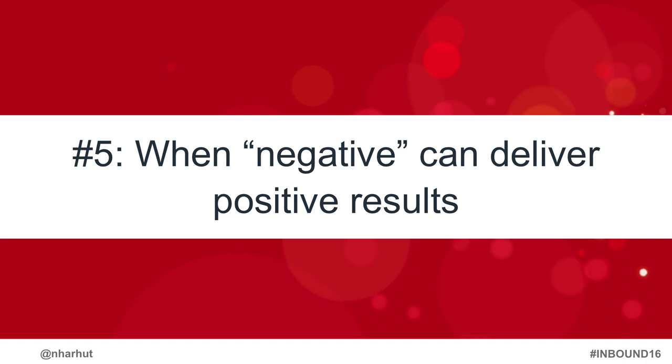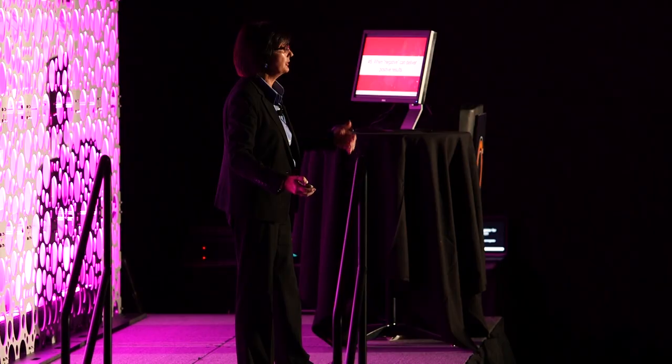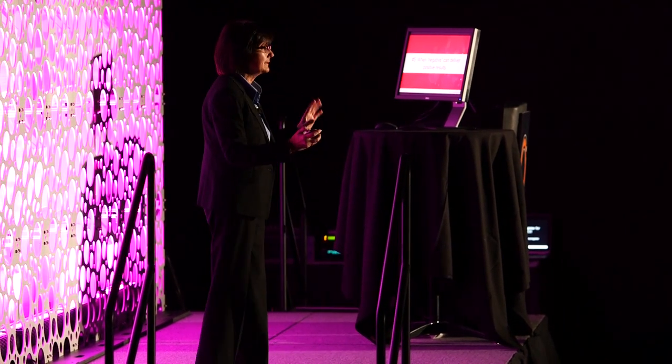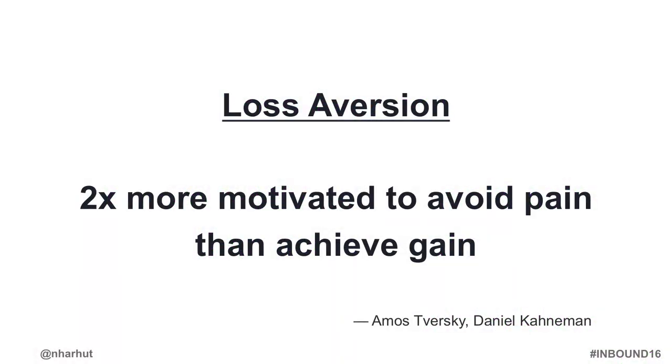Our fifth human behavior hack: when negative can deliver positive results. In marketing it's all about the benefits — we tell people all the wonderful things that will happen if they buy our product, sign up for our service, or download our white paper. That's fine, except social scientists have found that people are twice as motivated to avoid pain as they are to achieve pleasure — twice as motivated to avoid pain and loss as to achieve pleasure and gain. So while benefits are important, sometimes a little well-placed loss aversion can go a long way. Instead of talking about what people will gain, tell them what will happen if they don't act, or what horrible stuff they can avoid if they do.